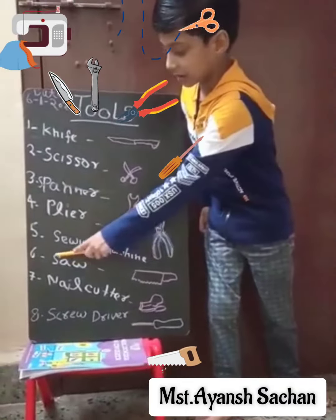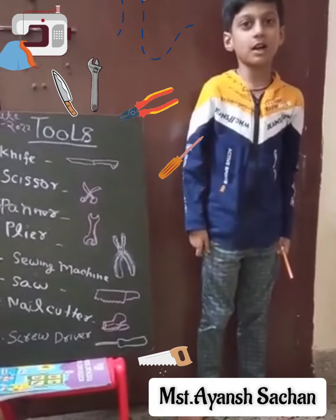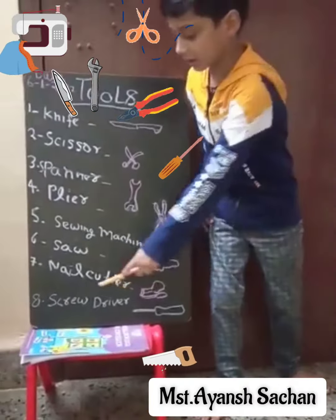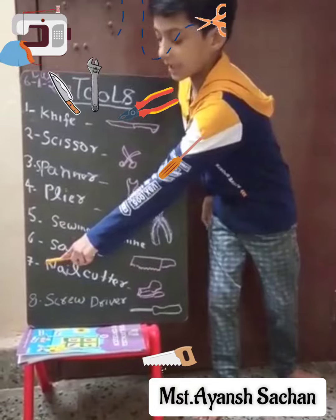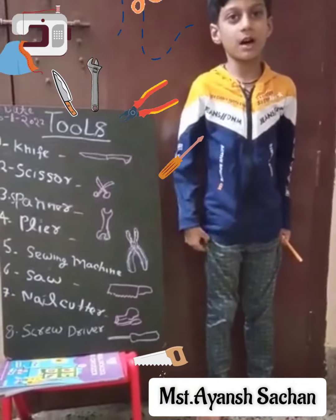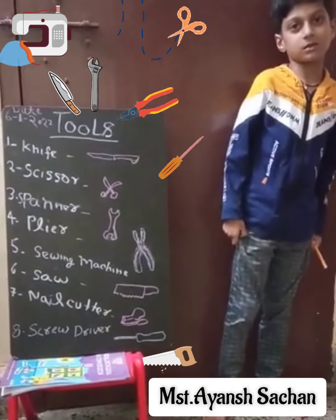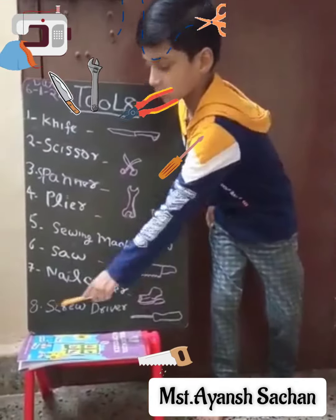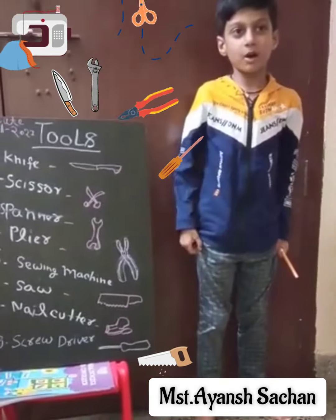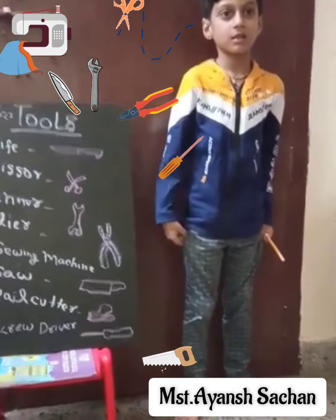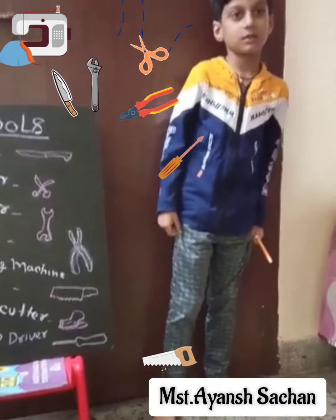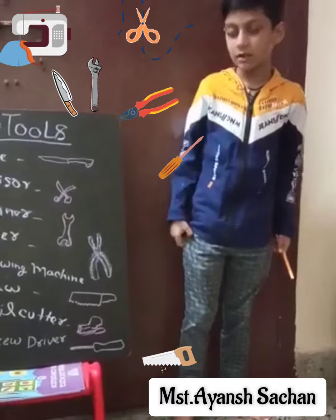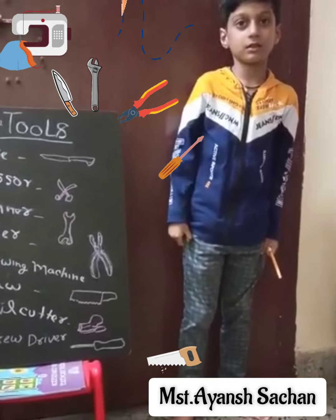Next is saw. Saw used for cutting wood. Next is nail cutter. Nail cutter used for cutting nails. Next is screw diver. Screw diver used for tightening and loosening screws.